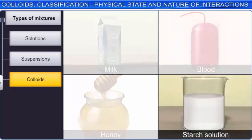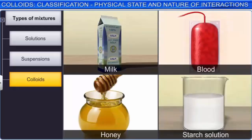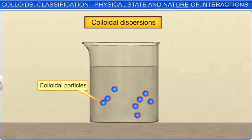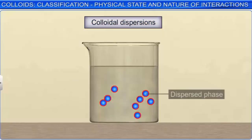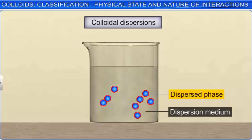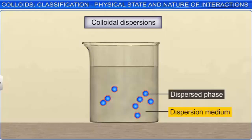Colloids are also called colloidal dispersions because the colloidal particles are dispersed throughout the mixture. For a colloidal solution, we use the terms dispersed phase and dispersion medium. The phase that is scattered or present in the form of colloidal particles is called the dispersed phase, and the medium in which the colloidal particles are dispersed is called the dispersion medium. For example, in a starch solution, starch represents the dispersed phase, while water represents the dispersion medium.